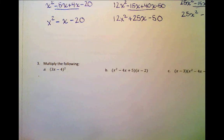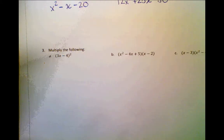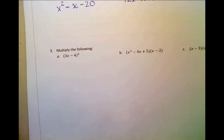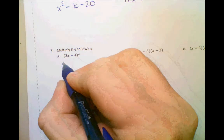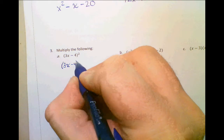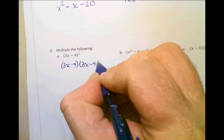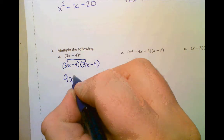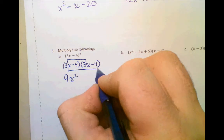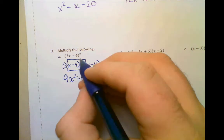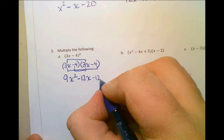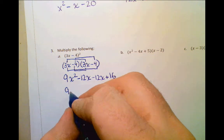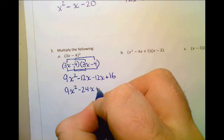Now let's look at the next problem — this gets a little more complicated. In A, we have 3x minus 4 squared. A lot of times you want to distribute the squared, but that would be wrong. The squared just means you're multiplying something by itself, so rewrite it as 3x minus 4 times 3x minus 4, then use FOIL. 3x times 3x is 9x squared; the Outside and Inside both give negative 12x; and negative 4 times negative 4 is plus 16. So we have 9x squared minus 24x plus 16.